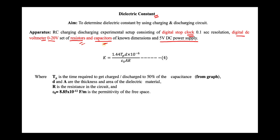The capacitors and resistors are of known dimensions. In this experiment we are going to calculate the dielectric constant. The dielectric constant is defined as k, where k equals 1.44 × tp × d × 10 to the power of minus 6, divided by epsilon naught × A. tp is the time required to get charged or discharged to 50 percent.